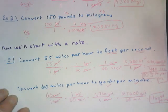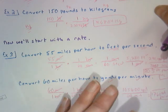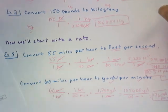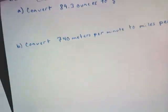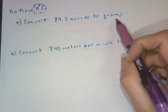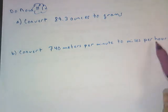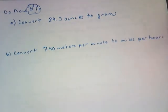So now I'm going to give you a couple to try on your own. So you need a calculator, and you need to make sure that you're canceling out your units before you do your math. In do now number 1, for A, I want you to convert 89.3 ounces to grams. And then in B, convert 740 meters per minute to miles per hour. So do it on your own, and then we'll discuss the strategy.